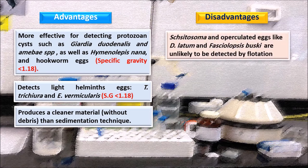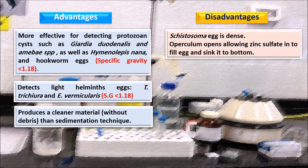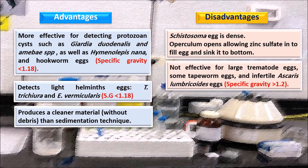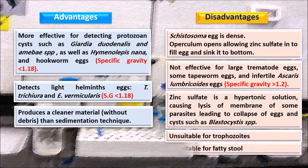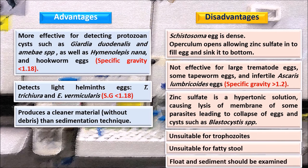Disadvantages: Schistosoma and operculated eggs like Diphyllobothrium latum and Fasciolopsis buski are unlikely to be detected by flotation. Schistosoma eggs are dense; operculated eggs open allowing zinc sulfate in, causing them to sink. Not effective for large helminth eggs, some tapeworm eggs, and infertile Ascaris lumbricoides eggs with a specific gravity greater than 1.2. Zinc sulfate is a hypertonic solution, causing distortion of membranes of some parasites, leading to collapse of eggs and cysts such as Blastocystis species. Unsuitable for trophozoites and fatty stool; both float and sediment should be examined.